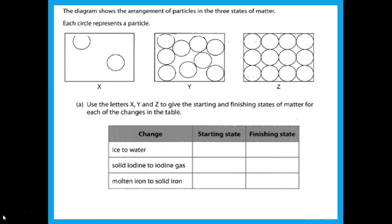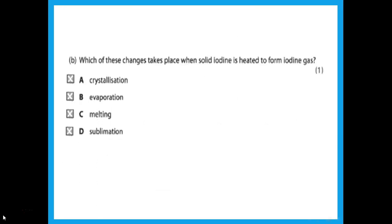There are three boxes X, Y, and Z. Use the letters to give the starting and finishing states for each change. Z is solid, Y is liquid, X is gas. Ice changing to water: Z to Y. Solid iodine to iodine gas: Z to X. Molten iron — which means liquid iron — changing to solid iron: Y to Z.